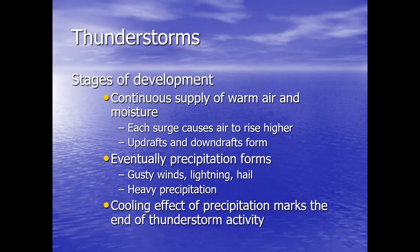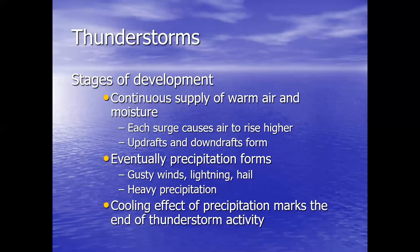The stages of development of thunderstorms happen as a result of several things. The first stage is where there is a supply of warm air and moisture. Warm air rises, and if that warm air is carrying water vapor, that water vapor will rise to a point where it condenses. Condensation is a warming process, so as long as the air inside the cloud remains warmer than the air outside, it will continue to rise, fueled by the calories of energy being released. Each surge causes the air to rise higher, and updrafts and downdrafts will form.